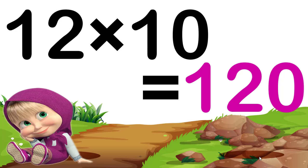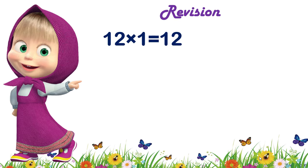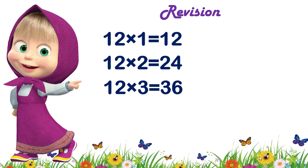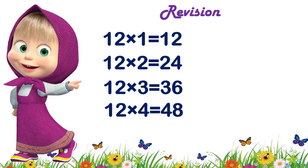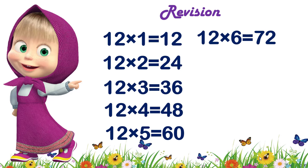Now children, let's revise the table quickly. 12 1s are 12. 12 2s are 24. 12 3s are 36. 12 4s are 48. 12 5s are 60. 12 6s are 72. 12 7s are 84.